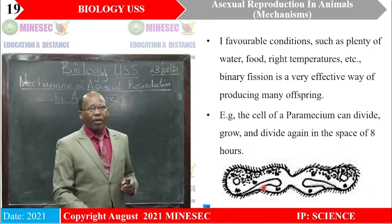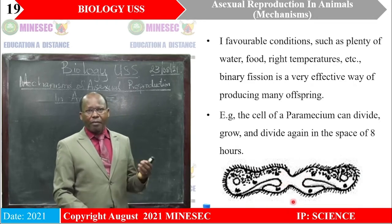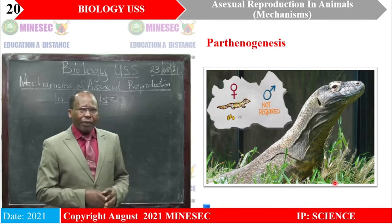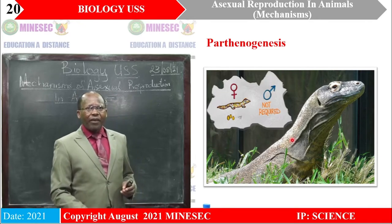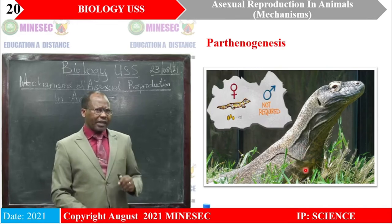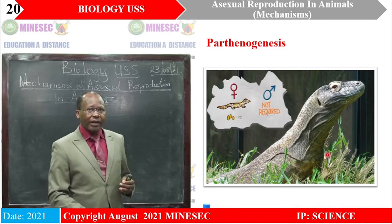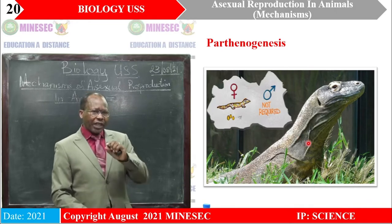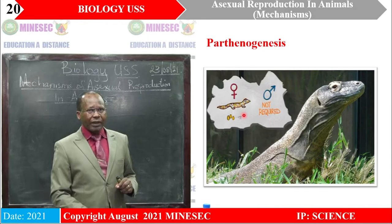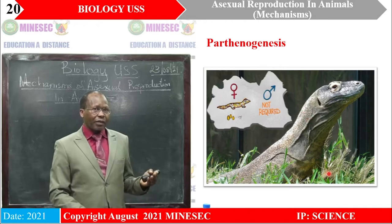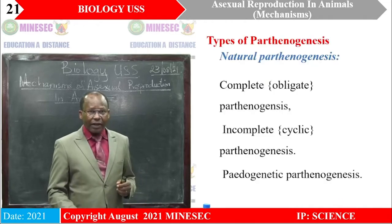Here is an example of paramecium undergoing binary fission. We can see that with time, this indentation is going to cut and give rise to two daughter paramecia. Here is also an example in paramecium. We have a special type of lizard we are going to talk about. This lizard has a special way in which it reproduces. This is the female, and this female does not require the male to reproduce. We are going to see that in a short while — that is the essence of this lesson.